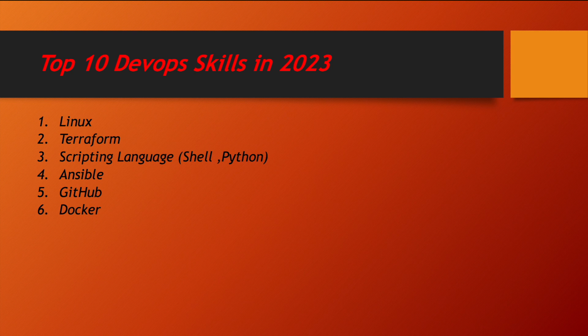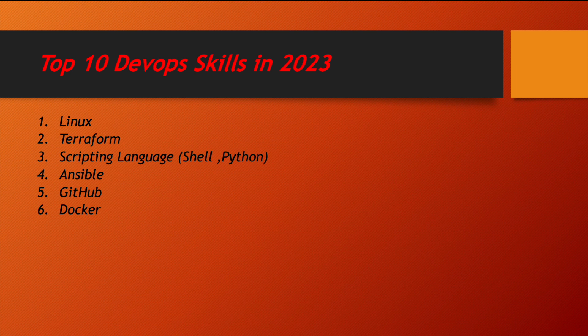Coming to Docker and Kubernetes — a lot of people are curious about containerization and where to start. Docker is really booming in the IT industry nowadays. The reason is its performance, ease of deployment, and ease of scaling. Docker and Kubernetes are definitely something you should be learning. Even if you are a beginner, that's fine to get a job. We already have playlists for Docker and GitHub — please follow those.